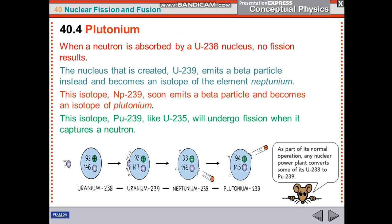How do we get Pu-239? We can use U-238 to get Pu-239. As you see here, U-238 after capturing a neutron will become U-239, and then Np-239, and then finally Pu-239.